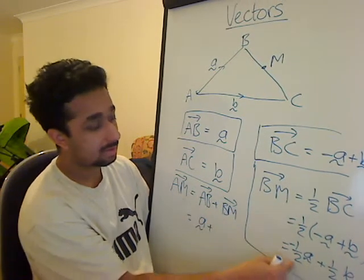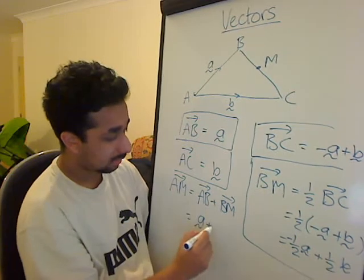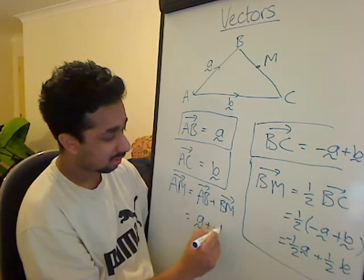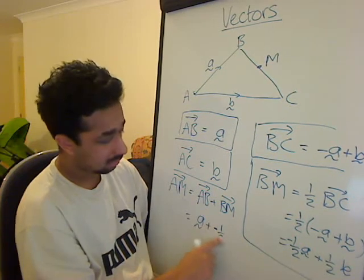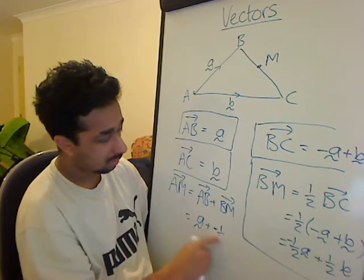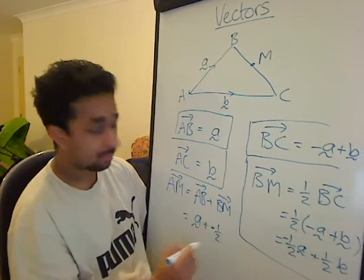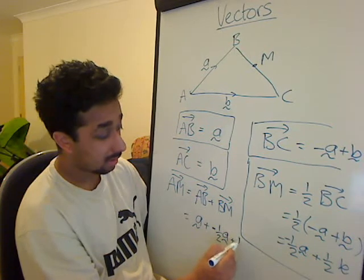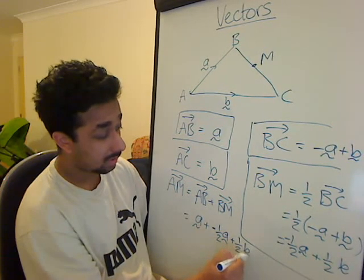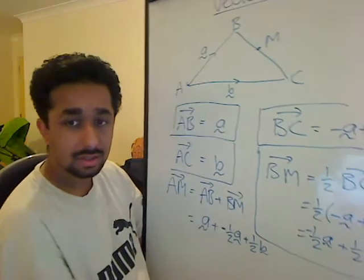Plus this stuff, B M. B M is equal to all this stuff. So minus half A plus half B. Right, it's getting a bit smaller. Let's bring it nice and close.